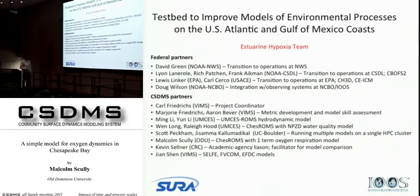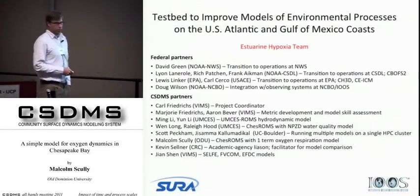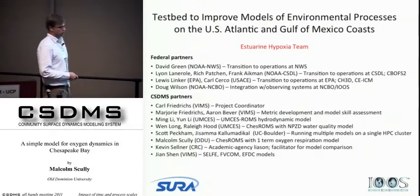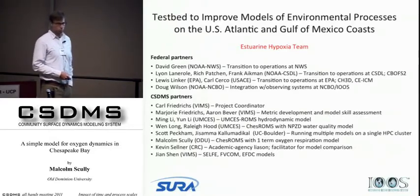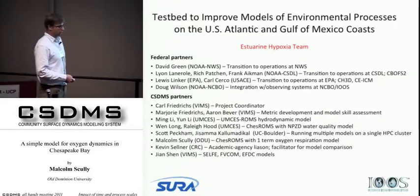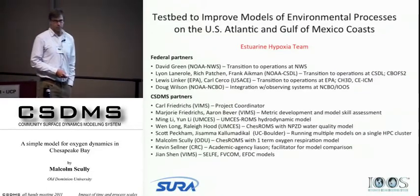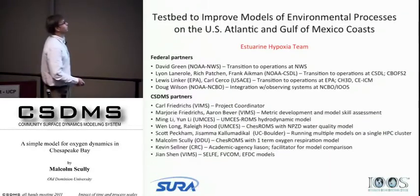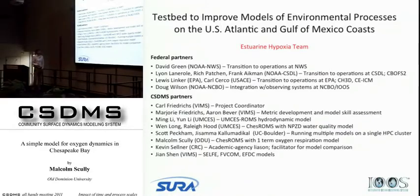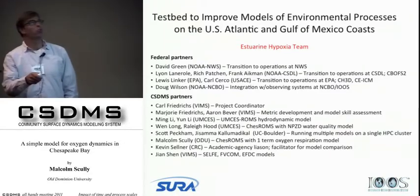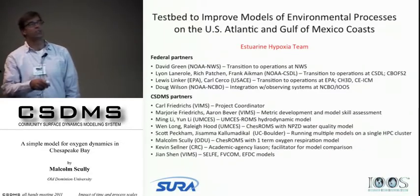Some of the funding that supported this project was through the NOAA IUS office and a proposal submitted by Sura. There are three different focus areas: one was on storm surge, one was on Gulf of Mexico hypoxia, and another group looking at estuarine hypoxia mainly focused on Chesapeake Bay. We had a number of federal partners — people at NOAA, EPA, and the Army Corps of Engineers.